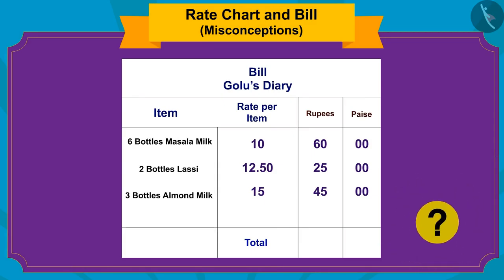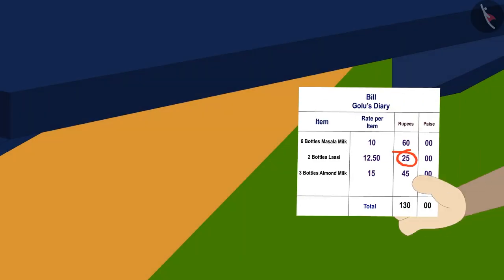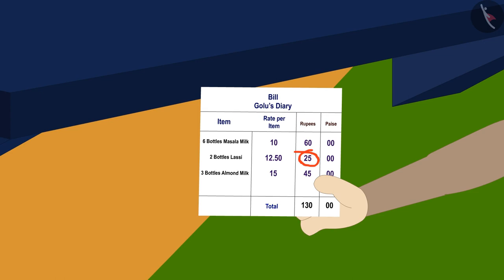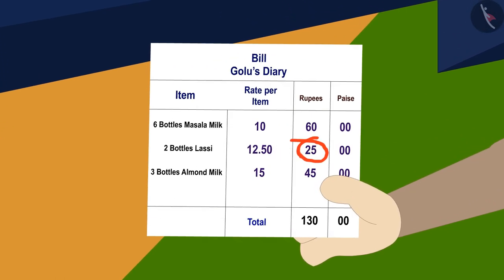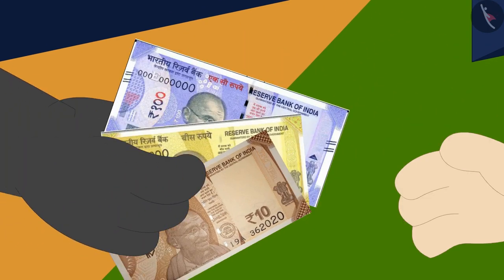Children, now can you find the true total value of all items? Well done! You have found the answer correctly. Shere Khan and Bholla owe a total of 130 rupees to Golu. Bholla also found Golu's mistake — just like you did — and gave him 130 rupees.